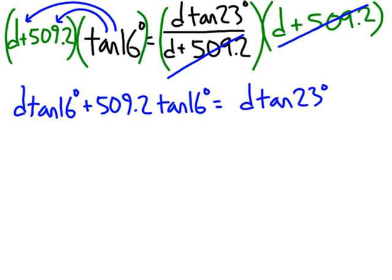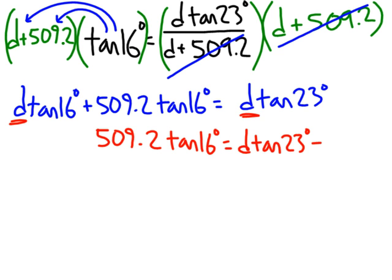I'm going to go ahead and distribute this tangent of 16 degrees. D tangent 16 degrees plus 509.2 tangent 16 degrees equals D tangent 23. We're trying to solve for this variable D. So I hope it makes sense that we would want to get all the D terms on one side and everything else on the other. I'm going to subtract this term over to the right side. I'd prefer to keep as many things positive as I can.